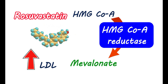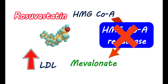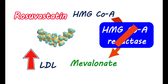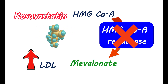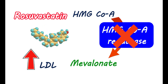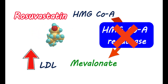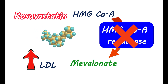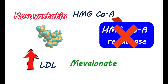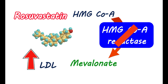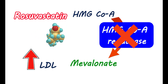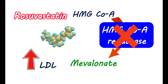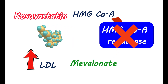Rosuvastatin shows competitive inhibition on the enzyme HMG-CoA reductase. This blocking activity prevents cholesterol synthesis in the liver. The liver then tries to obtain cholesterol from the blood, expressing LDL receptors on its surface through which LDL is taken up from the blood. This reduces LDL cholesterol levels in the blood, which reduces the risk of plaque formation in the arteries and lowers the risk of cardiovascular complications.